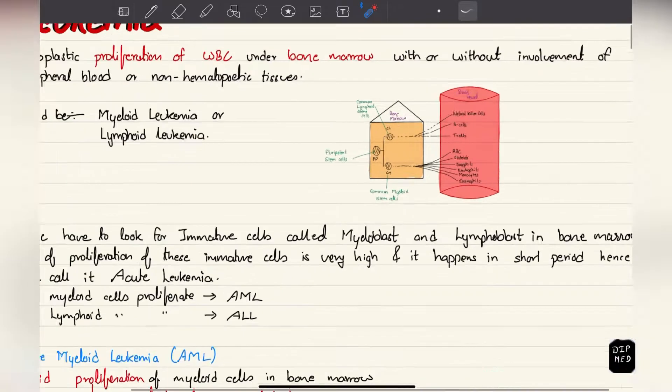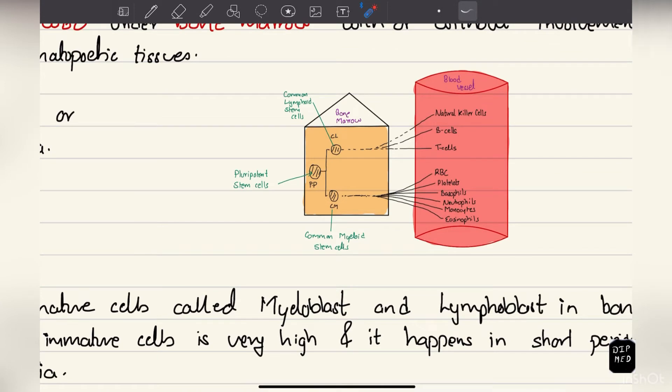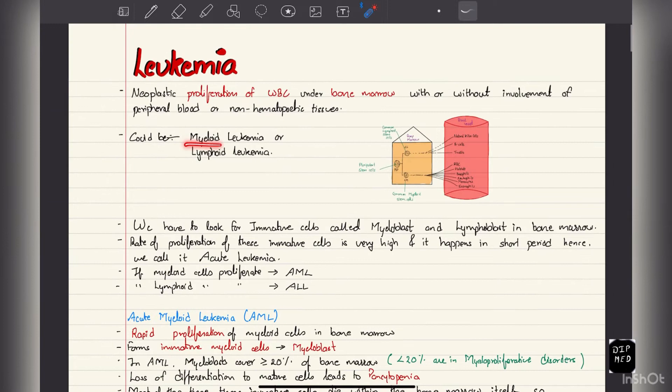Depending on the type of lineage that's involved, inside the bone marrow we have pluripotent stem cells which divide into lymphoid lineage or myeloid lineage. So depending on the involvement, there will be myeloid leukemia or lymphoid leukemia.